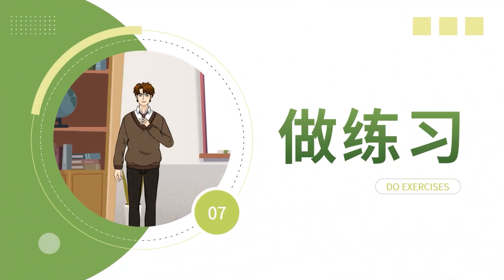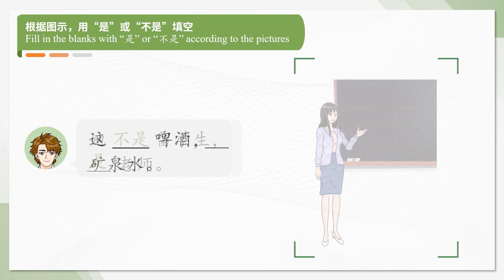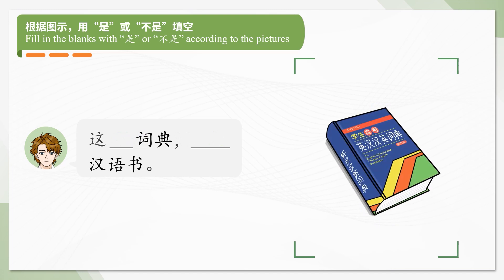Now let's do some exercises. Fill in the blanks with 是 or 不是 according to the pictures. 他不是留学生，是老师。这不是啤酒，是矿泉水。